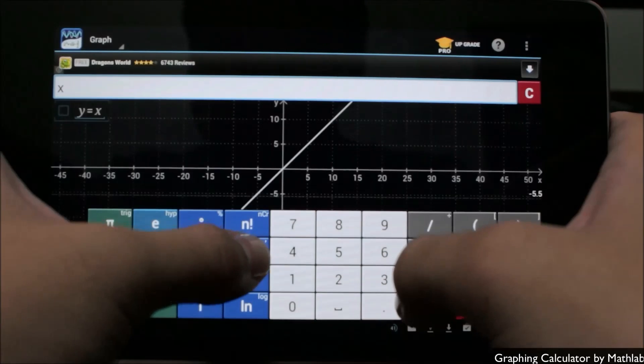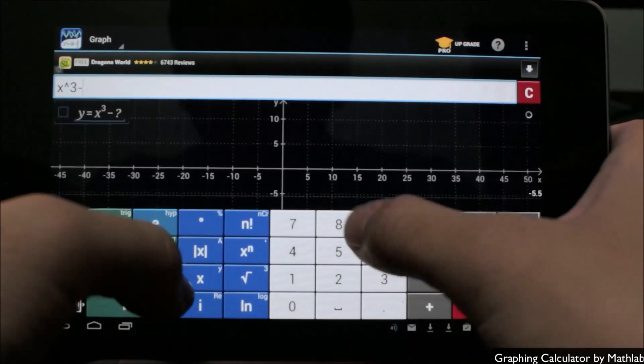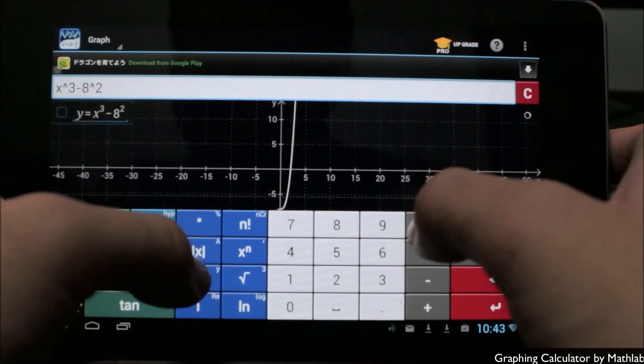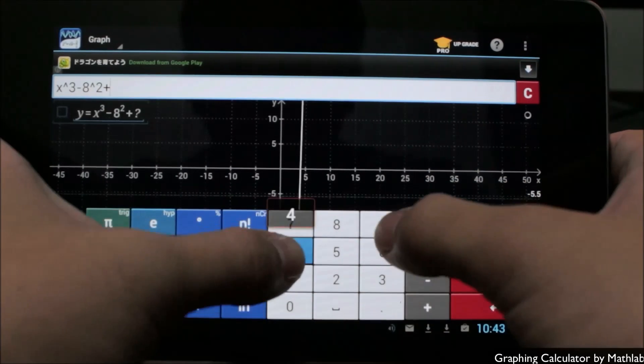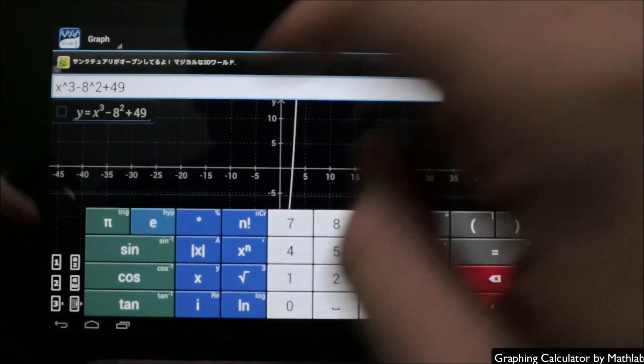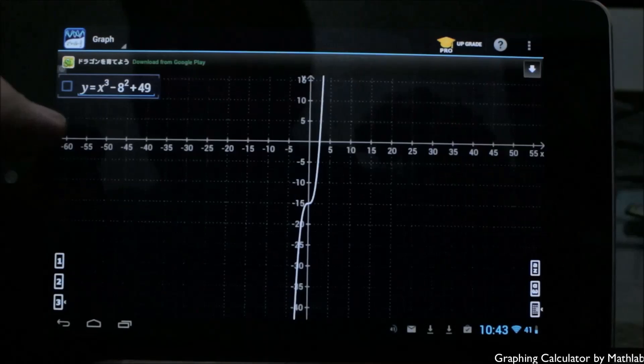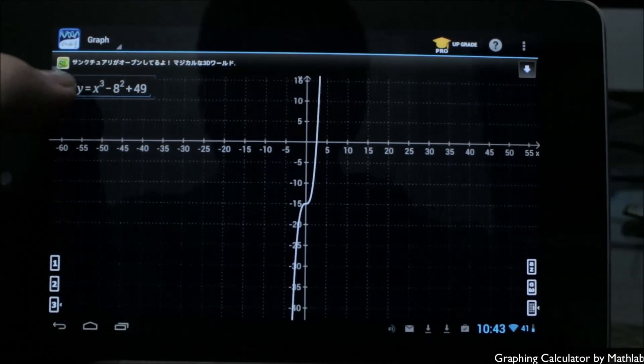So we'll go x to the power of 3 minus 8 to the power of 2, plus we'll say 49 here. Go ahead and let that sit, and I'm going to go ahead and hide the keyboard now so you can easily see it over here.